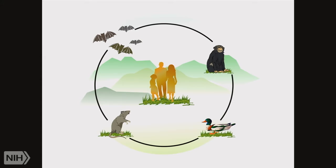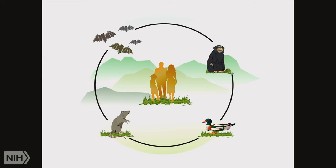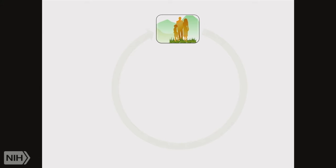It's very important to point out that we also have what we call amplifying reservoirs. For instance, poultry — in the case of avian influenza — is one of the most predominant amplifying hosts. From natural reservoirs, viruses can transmit into these amplifying hosts, greatly increasing exposure risk to humans.